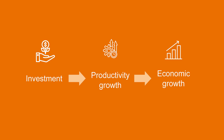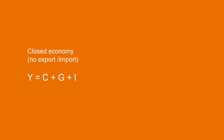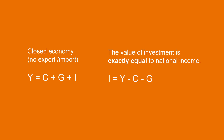This increase in the value of outputs constitutes economic growth. Let's move on to investments and savings in national accounts. Understanding the amount of investments in the economy is quite straightforward. Remember that national income, Y, in a closed economy is a sum of consumption, C, government spending, G, and investment, I. Let's rearrange the equation to get the value of investment: investment is equal to national income after consumption and after government spending. Where are the investments coming from? They are coming from savings.